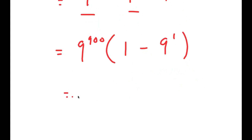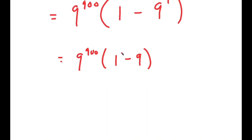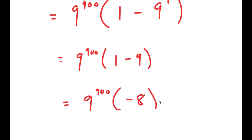This is equal to 9^900 times (1 minus 9), because 9^1 is the same thing as 9. And 1 minus 9 is equal to negative 8. So I get 9^900 times negative 8.